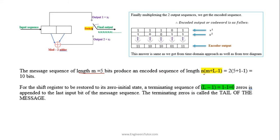The message sequence of length m = 5 bits produces encoded bits of length n × (m + l − 1), where n is the number of encoder outputs, m is the number of message bits, and l is the constraint length. In our example, constraint length is 2, so we get 10 encoded bits. To restore the shift register to its initial all-zero state, a terminating sequence of l − 1 zeros is appended to the input.